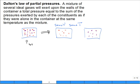And you'll find that this pressure is less than the total and that this pressure is less than the total, but when you add them up, they equal the total pressure. That's the concept of Dalton's law of partial pressures.